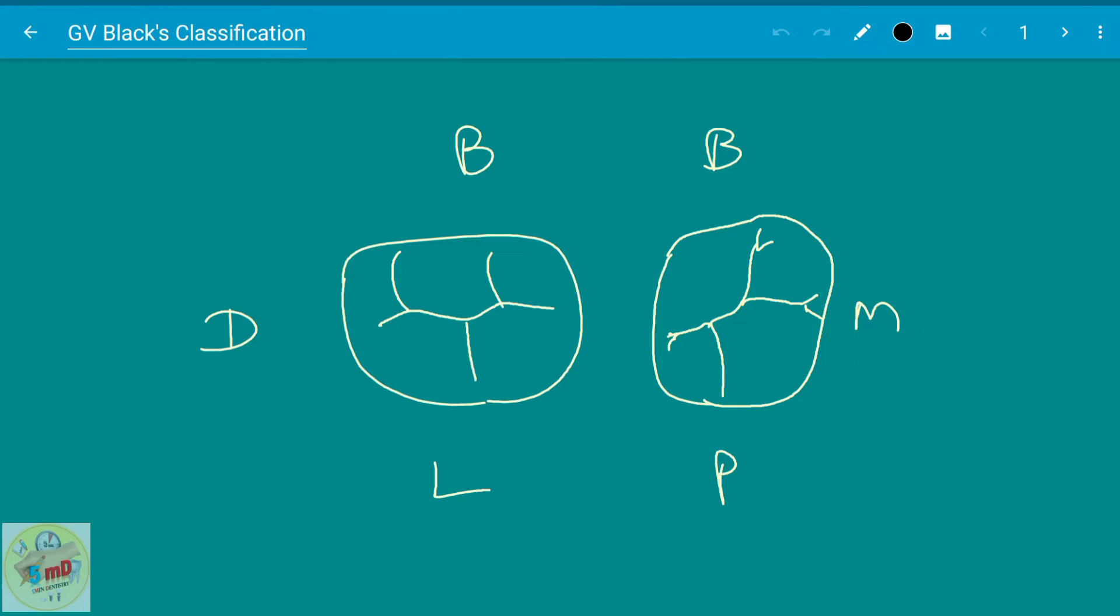Hello all, for those who have entered second year preclinical conservative endodontics, the first topic to be taught is GV Black's classification. Before starting with your cavity preparation, your staff members will be asking you to memorize this and recite it.